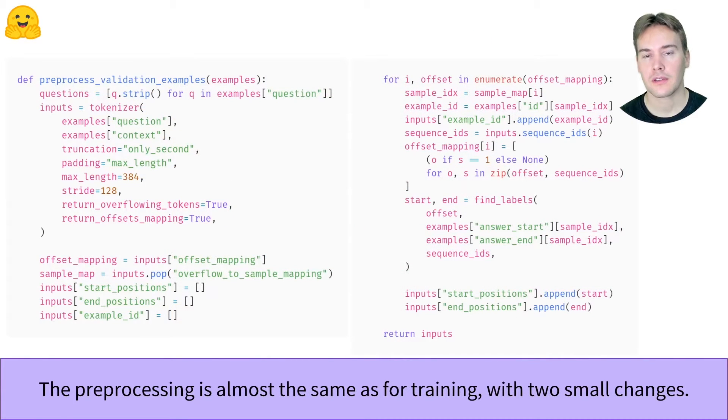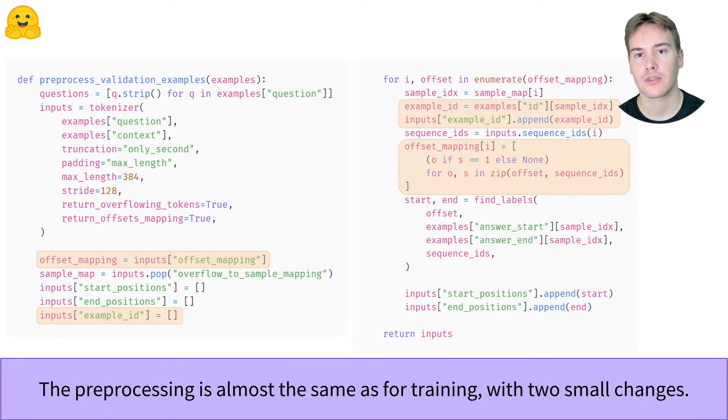For the preprocessing step, you should refer to the video linked below. It's not very different for validation, we just need to add a few lines to keep track of two things. Instead of discarding the offset mappings, we keep them and also include in them the information of where the context is by setting the offsets of the special tokens and the question to none. Then we also keep track of the example ID for each feature, to be able to map back feature to the examples that they originated from.